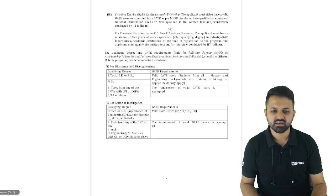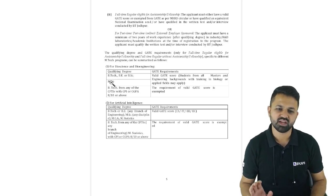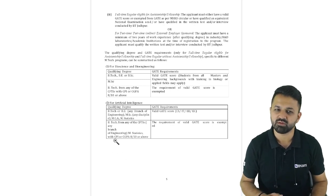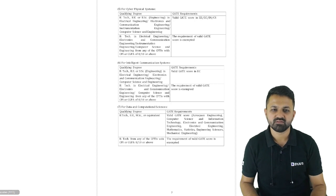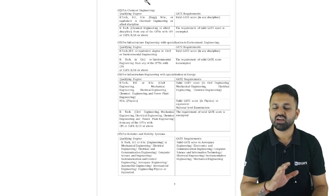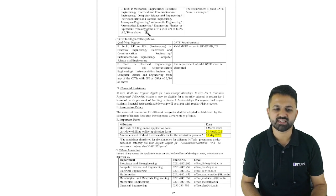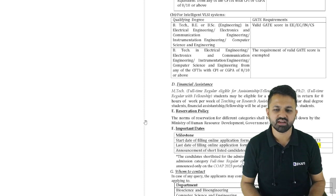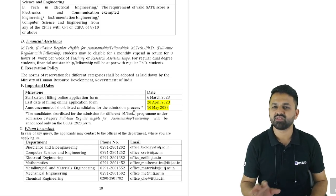A valid GATE scorecard is a must — without the GATE scorecard you cannot apply for any of these programs, either M-TECH or M-TECH plus PhD. The important dates are: the application started from 6th March, the last date is 20th April, and the result will be announced by 10th May. The required CGPA is 6 and above, or 6.5 GPA, and 5.5 for category students.